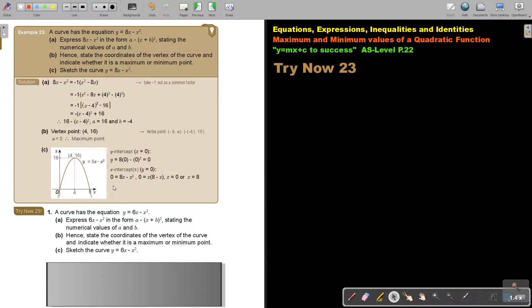Let's look at another example. A curve has the equation - express this in the form stating the numerical values of A and B. Okay, let's start. First, I prefer to rearrange it so I have the X squared and then the X. So, take negative 1 out.